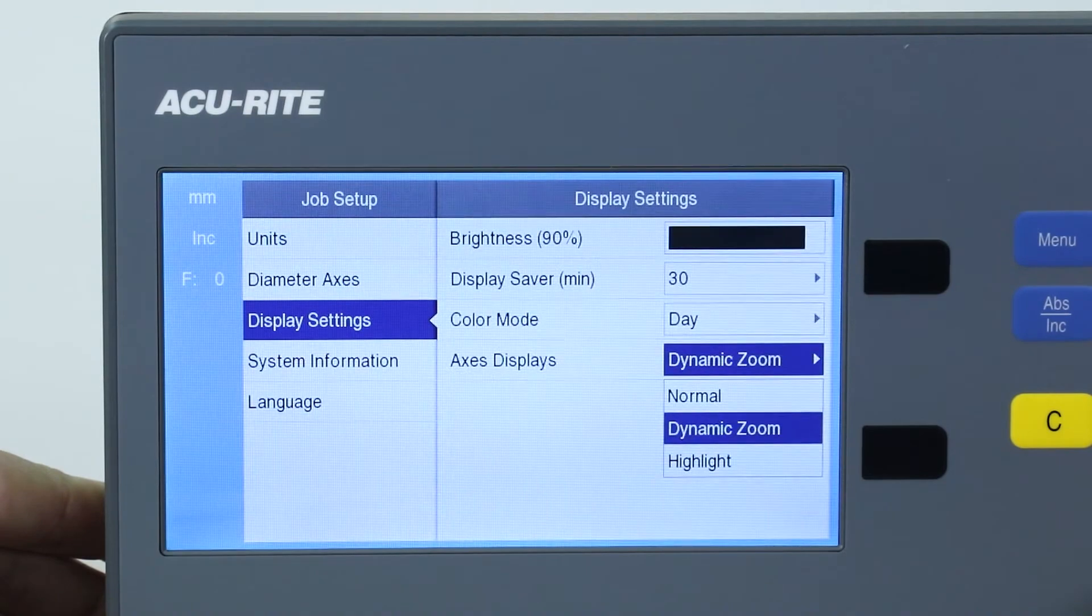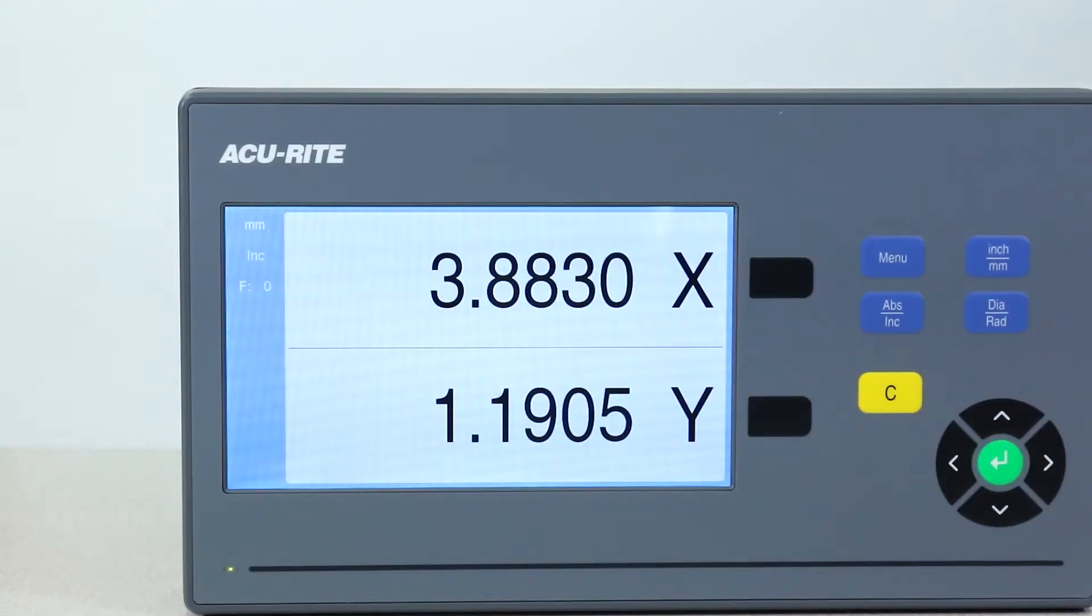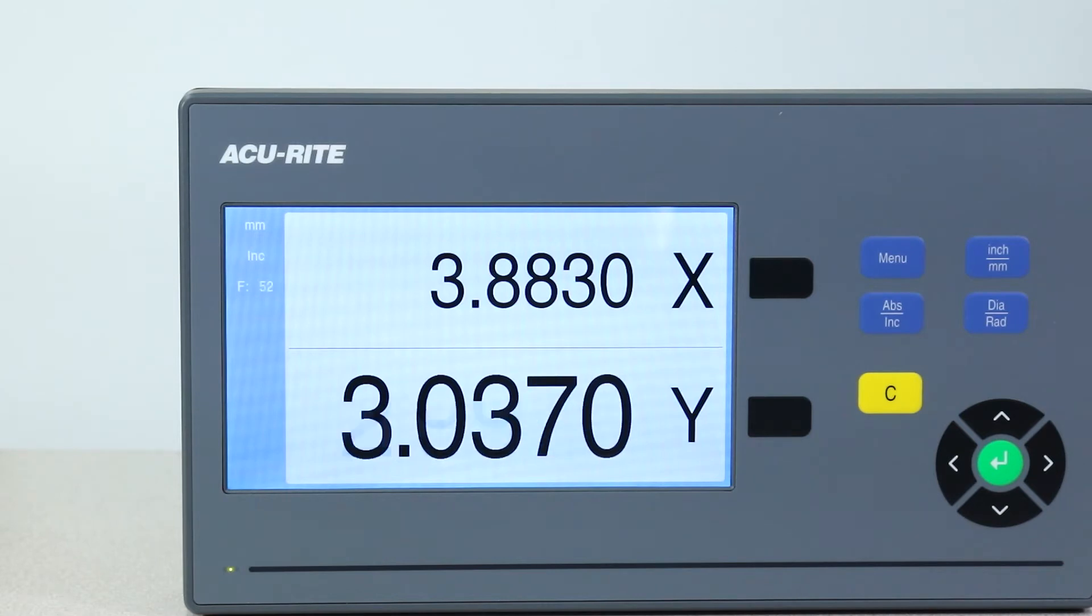Another nice feature is the dynamic zoom. If the operator is standing away from the readout, he can see the axis enlarge as it begins to move.